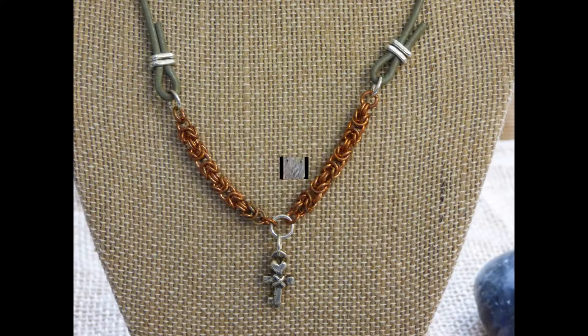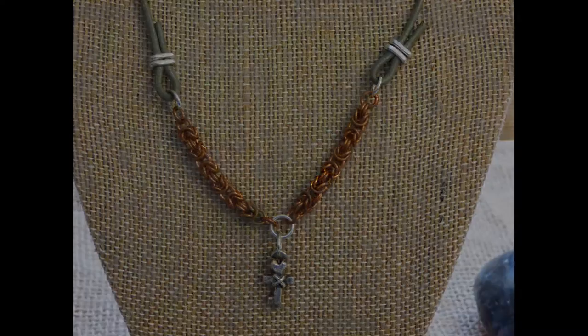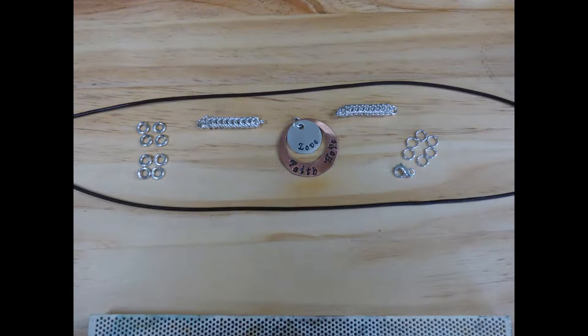And so what I started doing is using rings to make my own crimp beads so to speak. To make this particular necklace I used 16 gauge wire to make my rings on the left hand side that we'll be using as the crimp beads. And the leather cord is two millimeters.